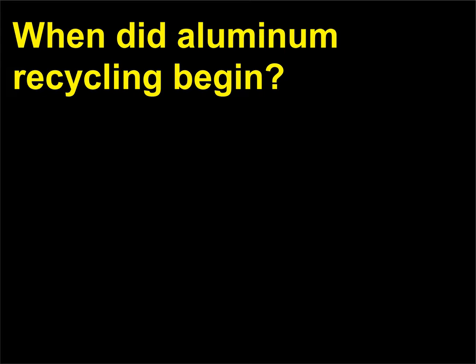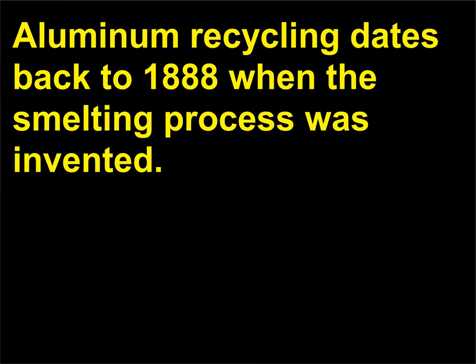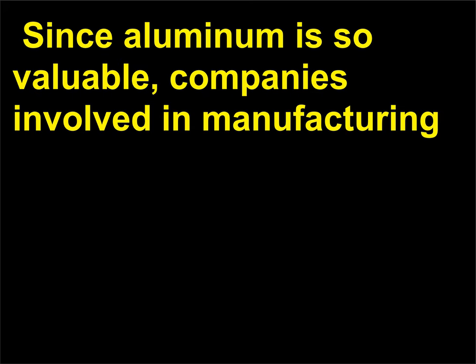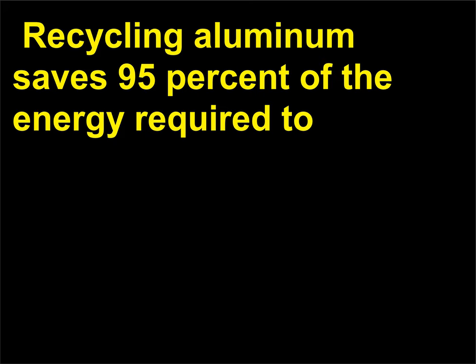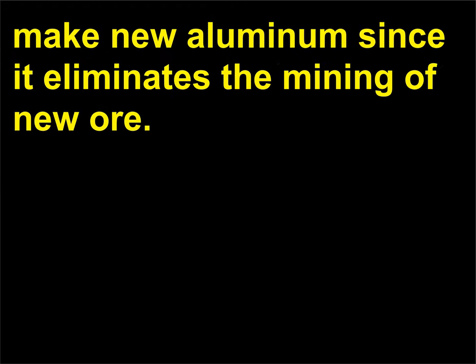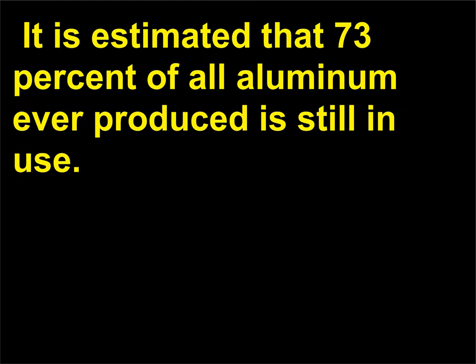When did aluminum recycling begin? Aluminum recycling dates back to 1888 when the smelting process was invented. Since aluminum is so valuable, companies involved in manufacturing aluminum were motivated to discover ways to make aluminum from aluminum. Recycling aluminum saves 95% of the energy required to make new aluminum, since it eliminates the mining of new ore. It is estimated that 73% of all aluminum ever produced is still in use.